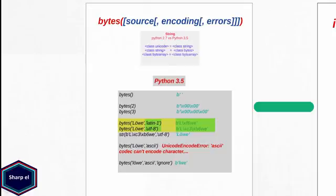For other possible values for the encoding argument please check the Python documentation. If you try to encode a bytes object with the wrong encoding, you will get an encoding error. To avoid such errors you can use the third argument, errors. If you set errors to 'ignore' you will get no error but may get wrong output.